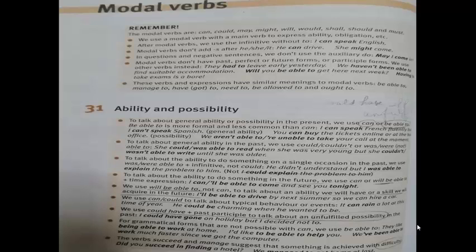To talk about general ability in the past, we use 'could', 'couldn't', or 'was/were able to'. For example, 'she could' or 'was able to read when she was very young, but she couldn't' or 'wasn't able to write until she was older.'